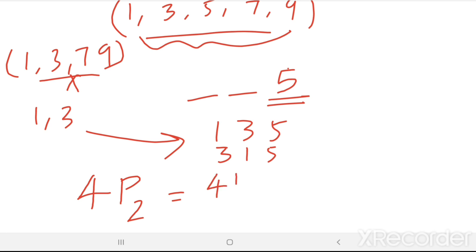4P2 means 4 factorial divided by 4 minus 2 factorial. This is equal to 4 into 3 into 2 factorial divided by 2 factorial. 2 factorial cancels. We get 4 into 3 equal to 12.